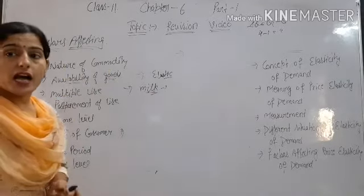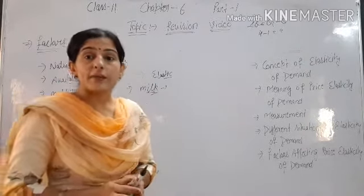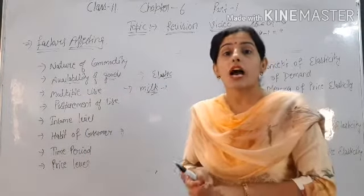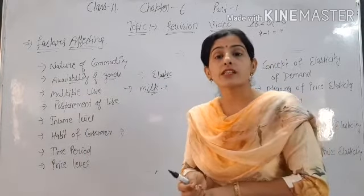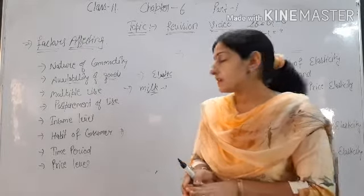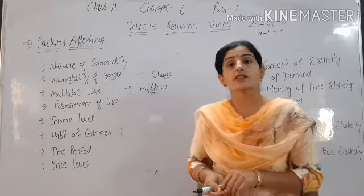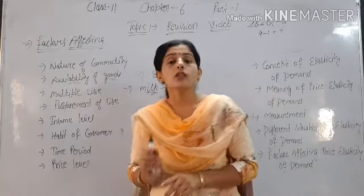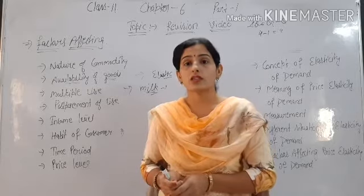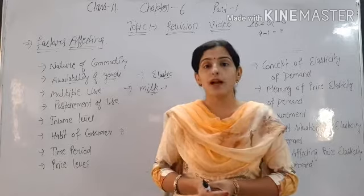Price level: high-priced commodities have more elasticity because they can be substituted or postponed. For example, high-priced goods like jewelry, diamond, or gold — we can postpone purchasing. Low-priced commodities like matchboxes and salt have inelastic demand because they have small prices and we always purchase them. These are the factors that affect the elasticity of demand.